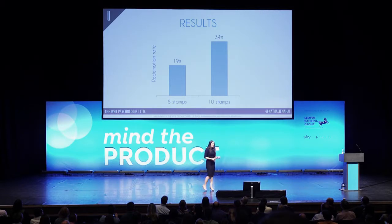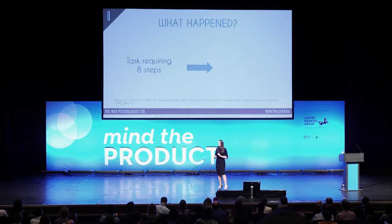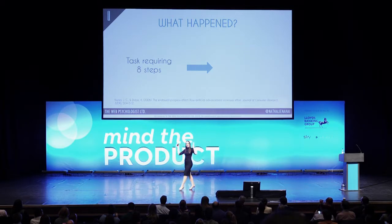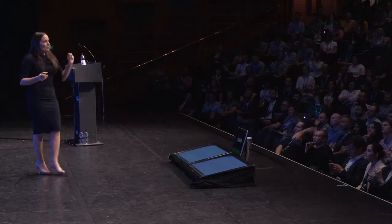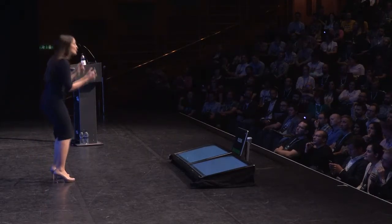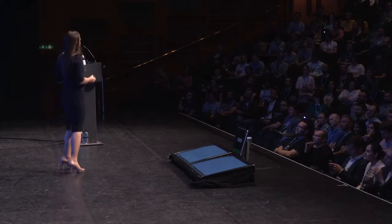But it was almost doubled by people in group B, the 10 stamps. They had mapped the task requiring eight steps into a task requiring 10, where two of the steps had already been completed. So the psychologists had essentially reframed the task — objectively exactly the same — so that the people with the 10 stamps perceived the task as already undertaken but incomplete.